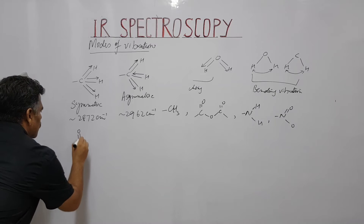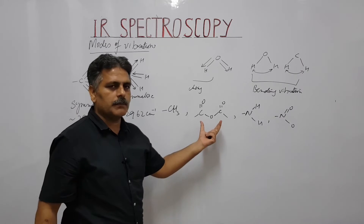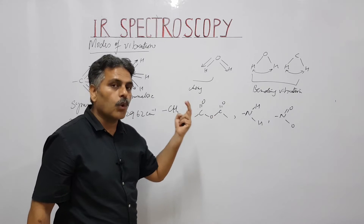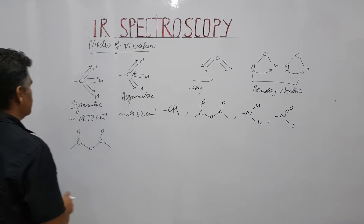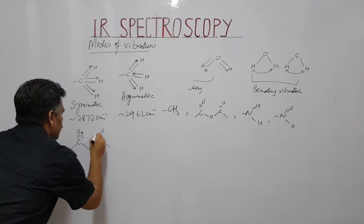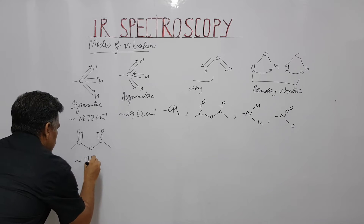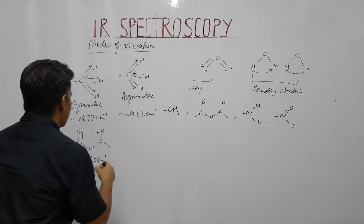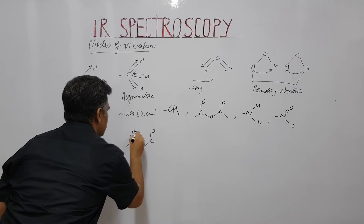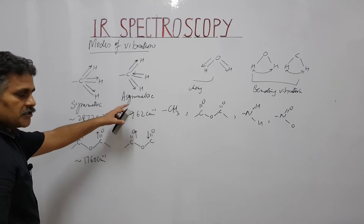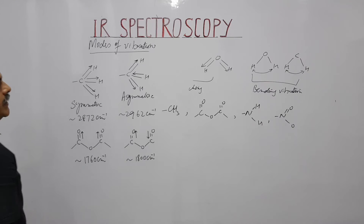Similarly for anhydride — carbon with two double-bond oxygens — in the carbonyl region you have two stretching absorptions: one symmetric and one anti-symmetric. The symmetric stretch of anhydride appears at a lower wavenumber, and the anti-symmetric stretch appears at approximately 1800 cm⁻¹. The same concept applies to NH2: symmetric stretch appears at 3300 cm⁻¹.